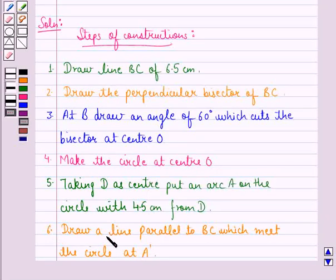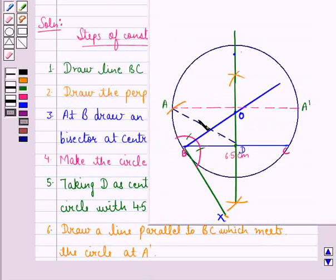Step 6 is, draw a line parallel to BC which meets the circle at point A dash. So like this we draw a line parallel to BC which meets the circle at point A dash.